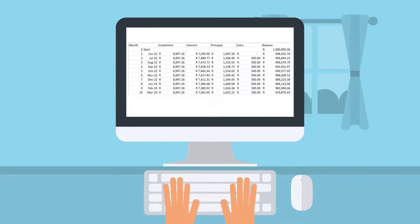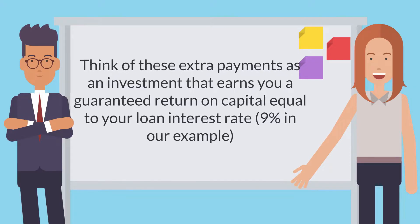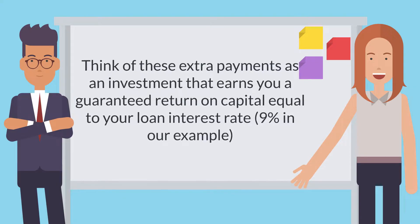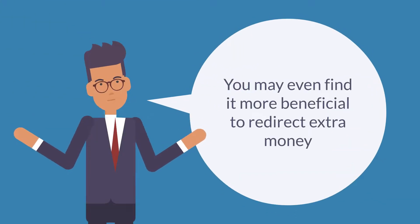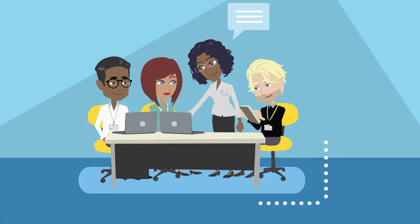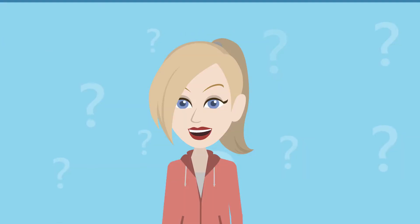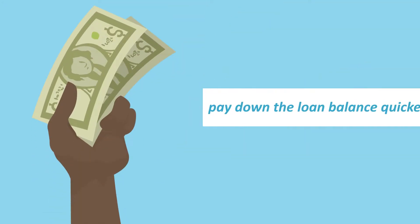Take a look at your savings. By paying 500 rand extra every month, it brings down your loan balance quicker than if you weren't paying extra. Think of these extra payments as an investment that earns you a guaranteed return on capital equal to your loan interest rate, which is 9% in our example. You may even find it more beneficial to redirect extra money into paying down your bond quicker, because those savings can potentially earn you a yield that outperforms other alternative investments. This is why it is the smart move to pay extra each month in order to pay down the loan balance quicker.